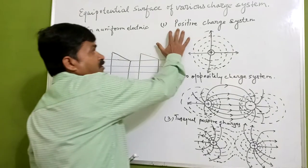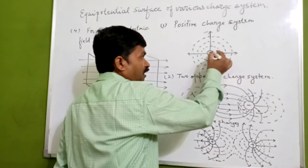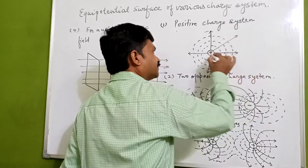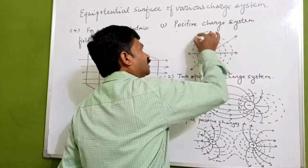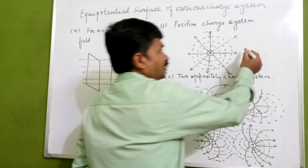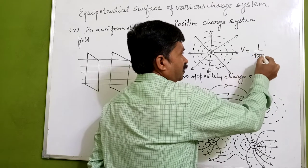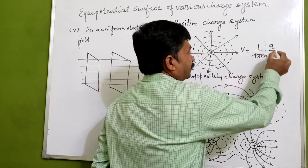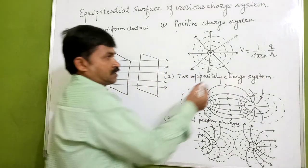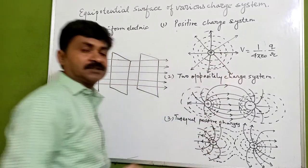For the first case — a single positive charge system — you will see this is a positive charge and the electric field lines are coming out radially outward in all directions. We know that V equals one over four pi epsilon naught into q over r, where r is the distance between the charge and the point where we want to know the electric potential.